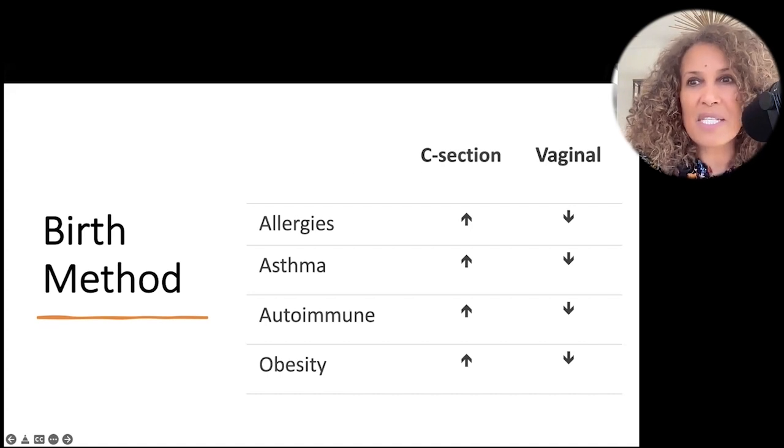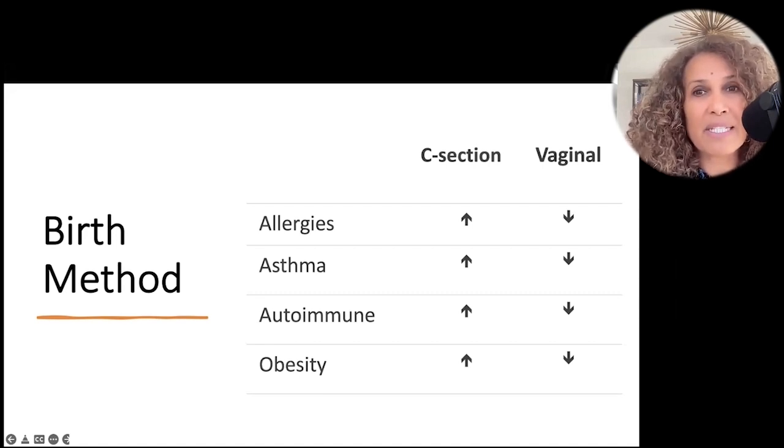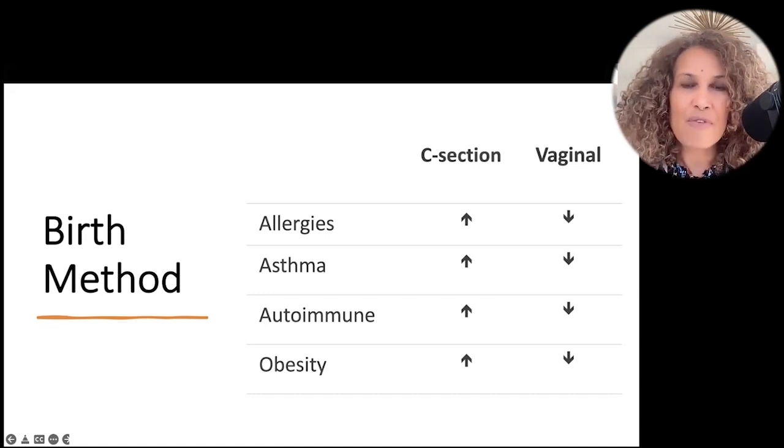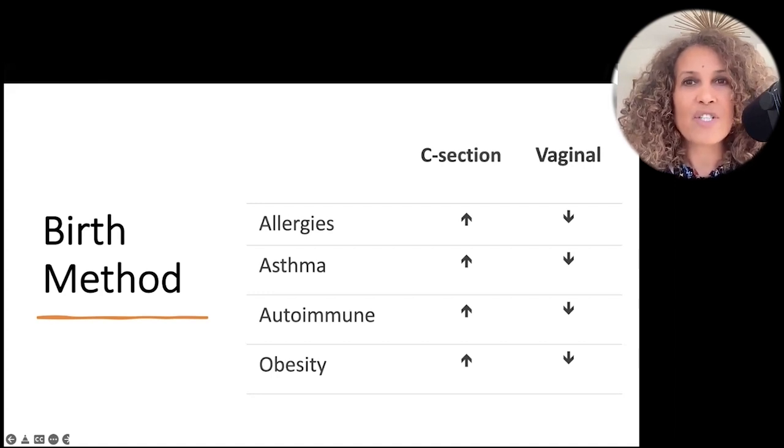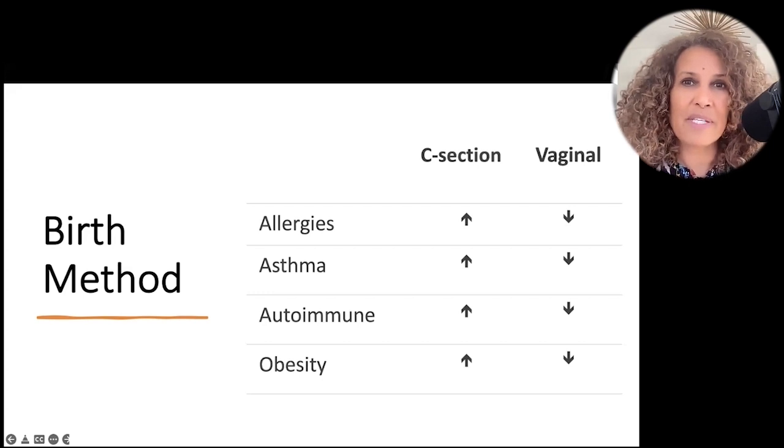And babies who don't have the good fortune of being born vaginally are colonized with hospital acquired staph, which is as bad as it sounds. So when we look at the differences between babies being born via C-section and being born vaginally, we see huge differences in allergies, in asthma, in autoimmune diseases, in obesity, and even in susceptibility to viral infections. So C-section births increase the risk of all of this and vaginal births decrease it. And again, why is that? It's because you need those microbes. And if at birth you don't get those founding species, it can follow you later into life.